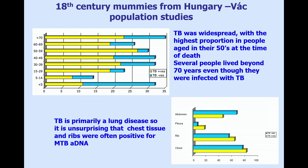Looking at the whole population, the greatest proportion of people with TB died in their 50s, but there were plenty of people over 70 with TB who lived to a great age. This was a wealthy community in the Austro-Hungarian Empire — aristocrats, factory owners, abbots, people high up in the church. They were not poor people, and that may be why so many lived to a great age even though they were infected.